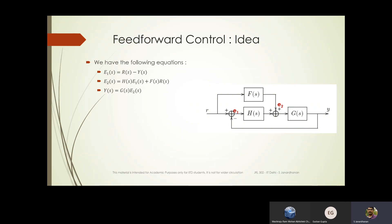Now, what happens to Y and how is it dependent on R when feed-forward control is added? The signal E1 at the first summing point is just R minus Y. E2 is the summation of H times E1 plus F times R. And Y is G times E2. If you solve for Y/R, you get the expression G times (H·F + 1) divided by (1 + GH).